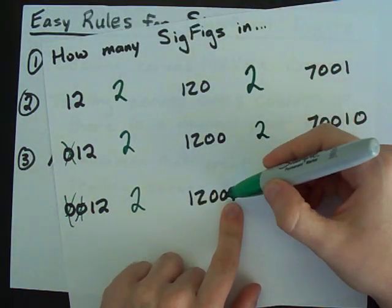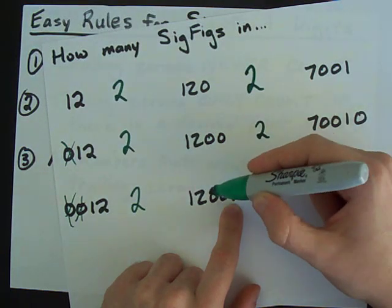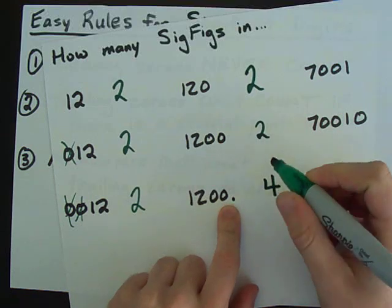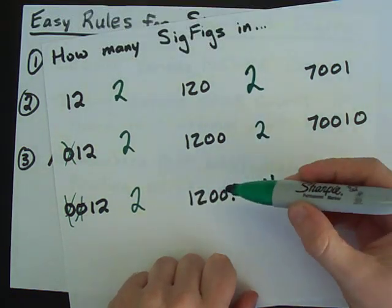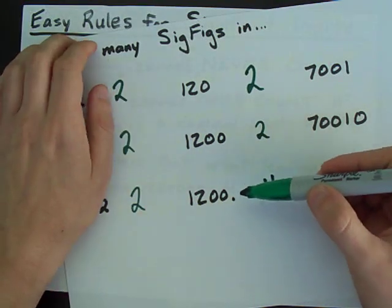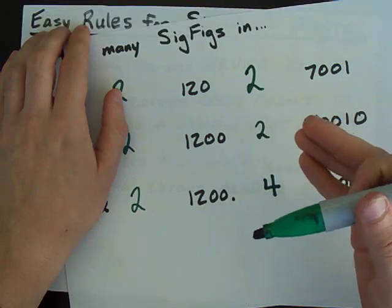This one has trailing zeros with a decimal point. So, all of the trailing zeros count. This has four significant digits. One, two, three, four. Even though none of the trailing zeros are after the decimal point, the fact that there's a decimal point there means that there are four significant figures.